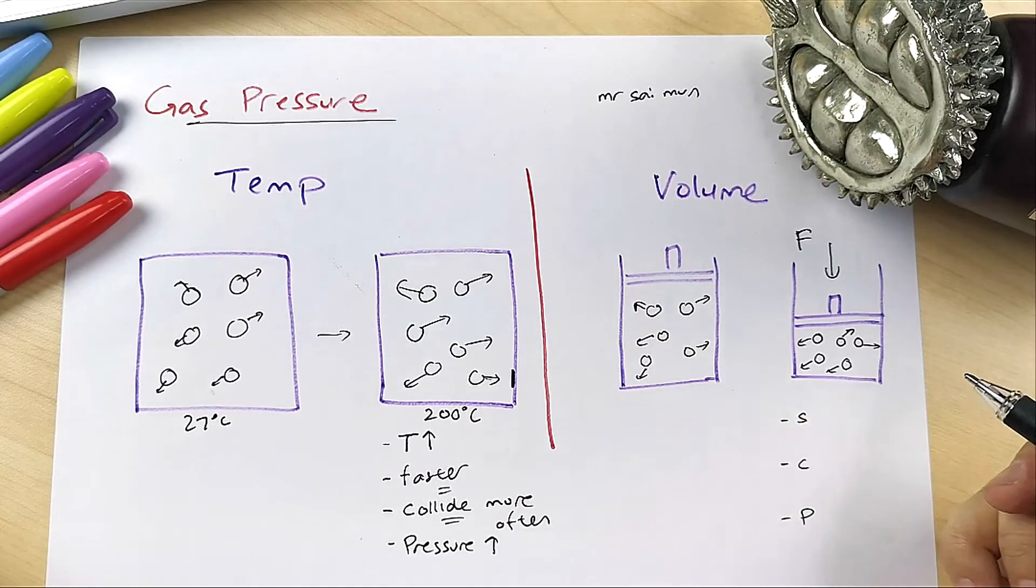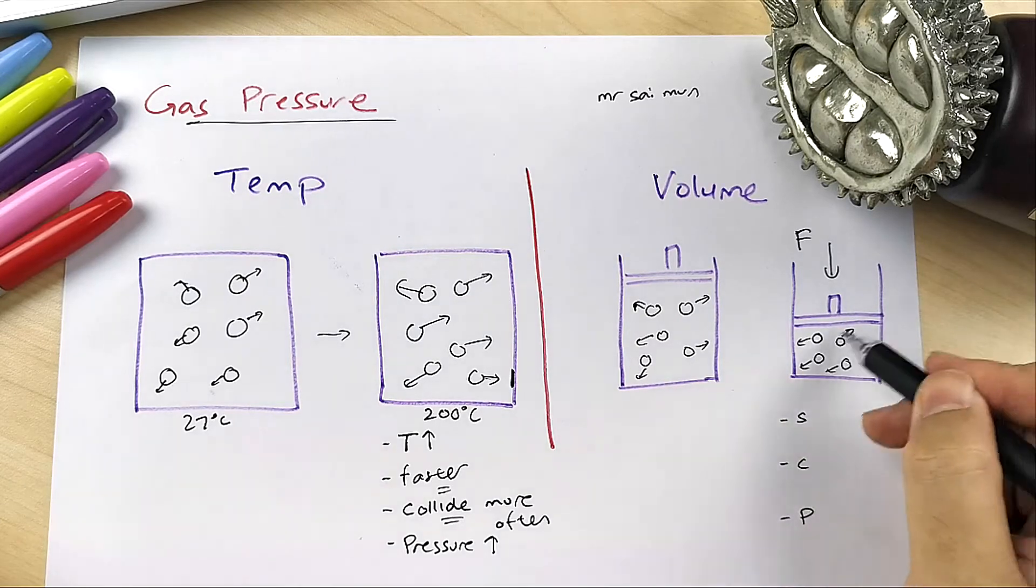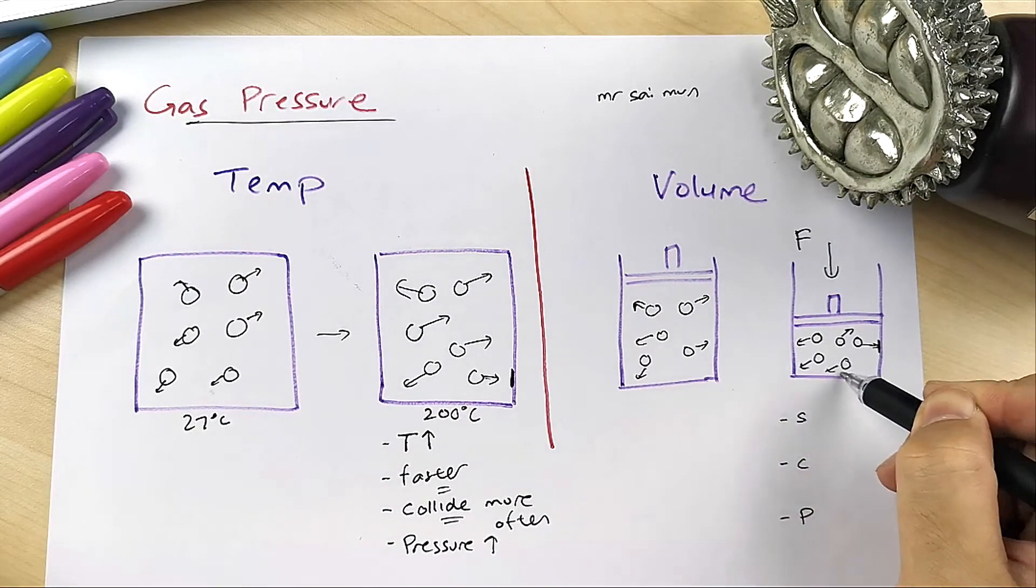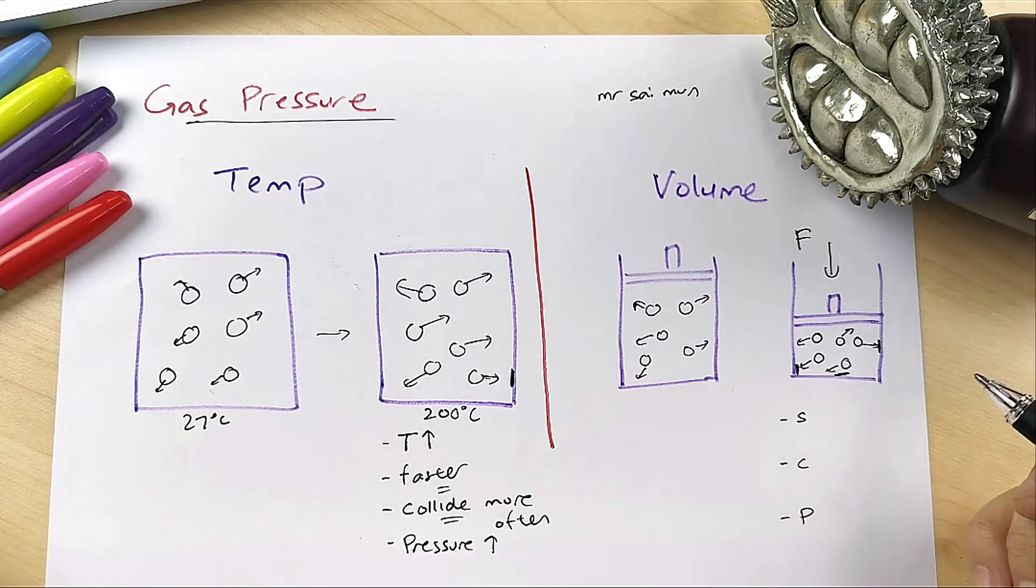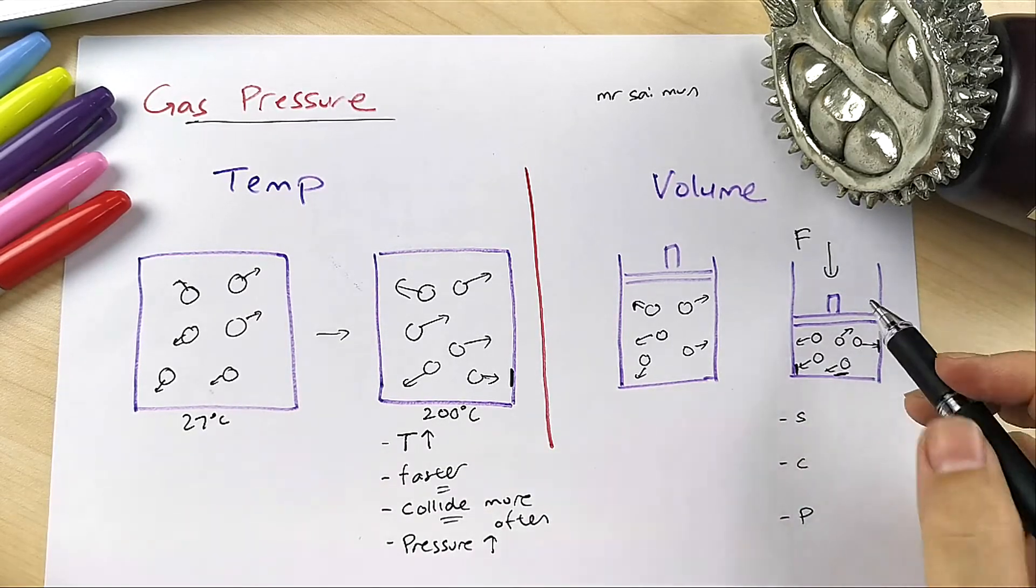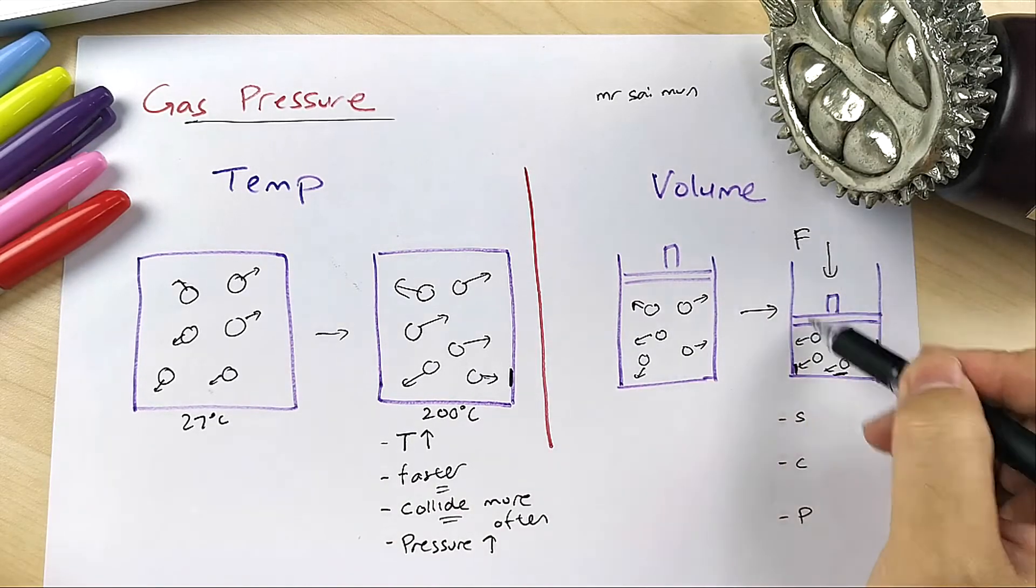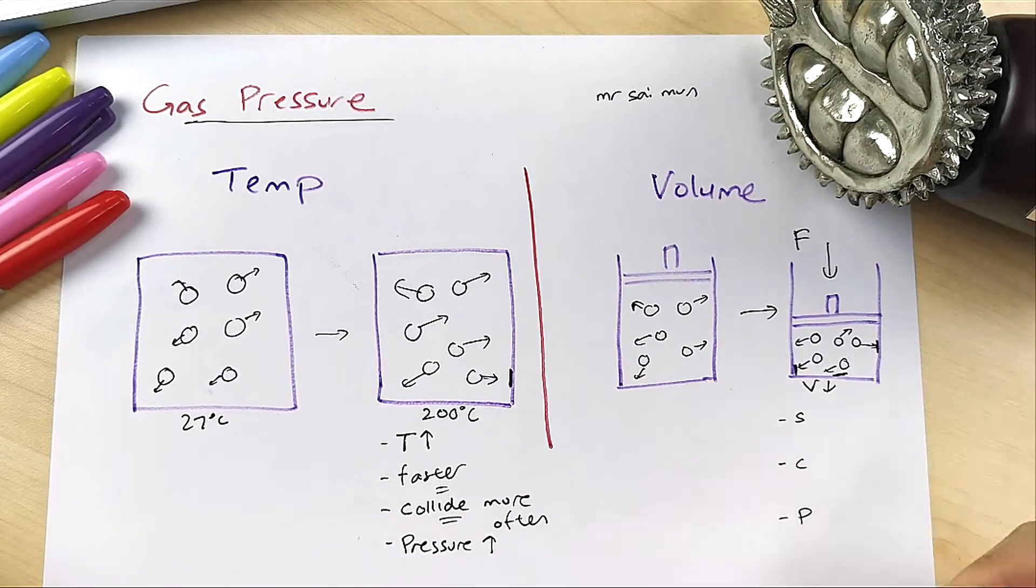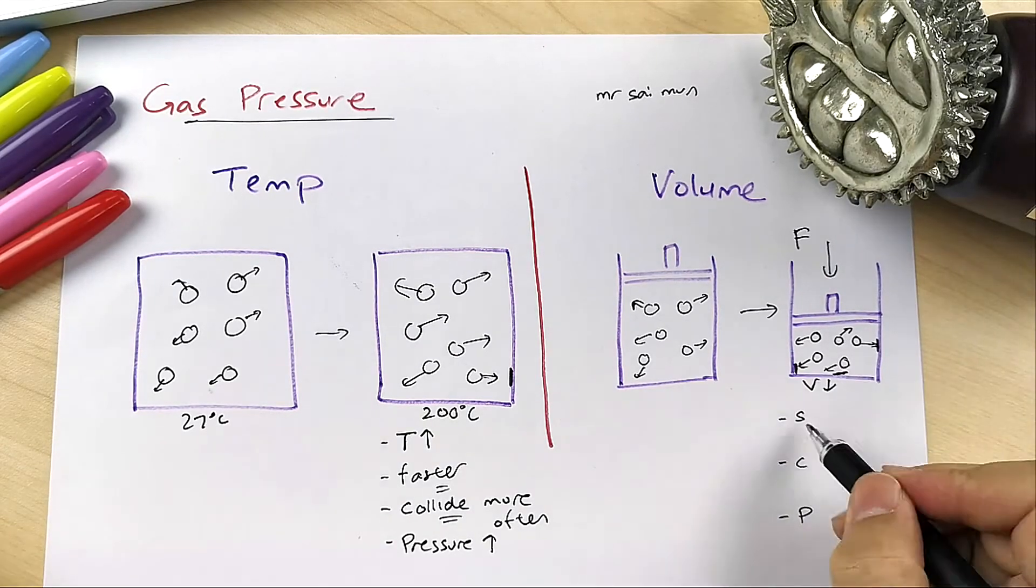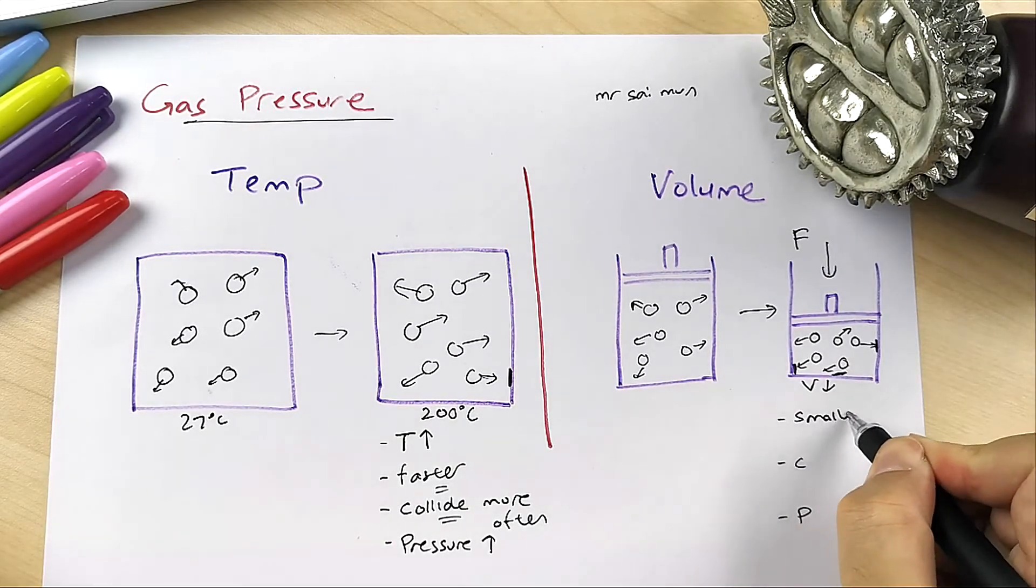Once again, when they collide more often onto the walls of the container, the pressure increases. If they ask you to explain when the volume decreases what happens - a two to three marks question - you can say: smaller space.